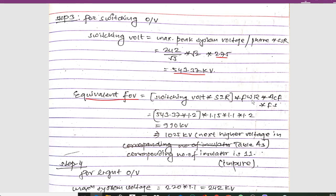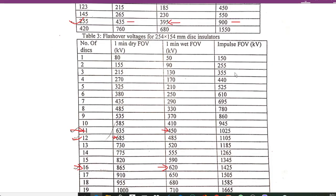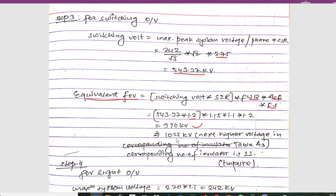This gives a switching voltage of 543.37 kV. The equivalent flashover voltage = switching voltage × SIR × FWR × ACF × FS. Substituting 543.37 × 1.2 × 1.15 × 1.1 × 1.2, we get 990 kV. From Table 3, checking the impulse column, the next higher voltage above 990 kV is 1025 kV, and the corresponding number of insulator discs is 11.